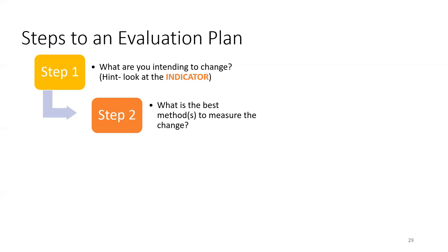Step two: decide what's the best way to measure the change based on the following considerations. The first is the type of change. For instance, many types of knowledge increase can be measured by pre- and post-testing. Test participants when they enter the project, in the middle if applicable, and when they leave the project. The knowledge increase is a direct result of the project. This works well for language fluency projects, as well as any skills upgrades, trainings, or workforce development.